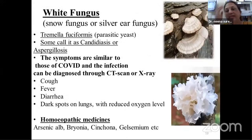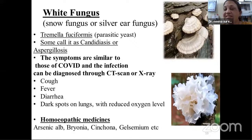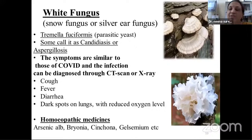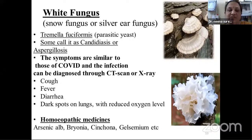White fungus — common name snow fungus, also known as silver ear fungus. Some call it candidiasis or aspergillosis, but the causative organism is a parasitic yeast named Tremella fusiformis. Symptoms are similar to COVID, diagnosed by CT scan or X-ray. Symptoms include cough, fever, diarrhea, dark spots on the lungs, and reduced oxygen level. For symptomatic treatment in mild and moderate cases: Arsenic album, Bryonia, Syngona, Gelsemium, etc. In severe cases, hospitalization and emergency treatment are required.